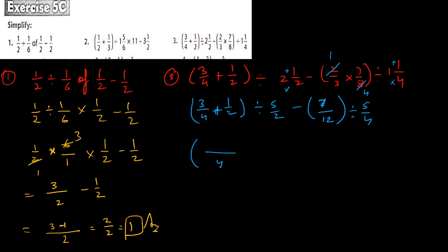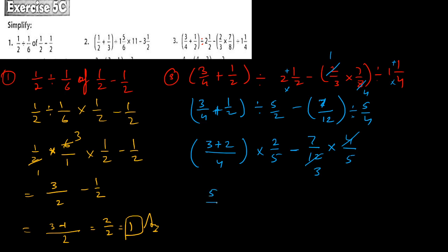Then divide 1 whole 1 upon 4: four ones are four, four plus one is five, so five upon 4. The LCM of 4 and 2 is 4, so three plus two twos are four — one two is two. Then multiply reciprocated 2 upon 5, minus 7 upon 12. We change divide to multiply and reciprocate to get 4 upon 5. Four threes are twelve, and five upon 4 multiply 2 upon 5 — this gives 2 upon 4, which simplifies.